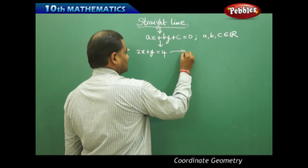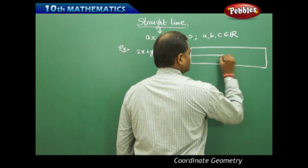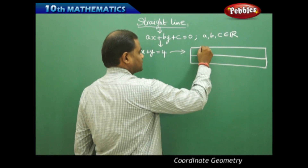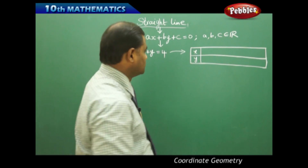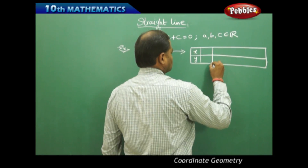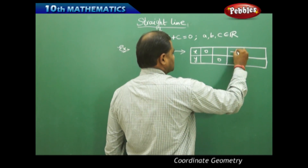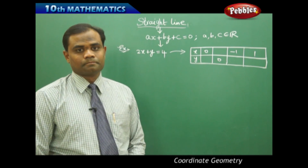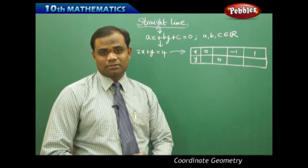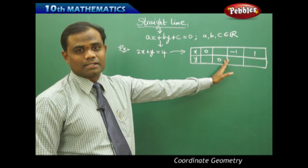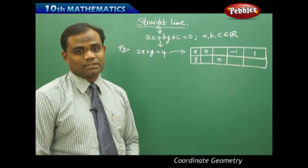Taking values in tabular form, I randomly take values of x in the first row and corresponding y values in the second row. I take x equal to 0, x equal to 2, x equal to minus 1, and x equal to 1. When x is 0, this gives the y-intercept, and when y is 0, this gives the x-intercept, as we have already discussed in the previous sessions.